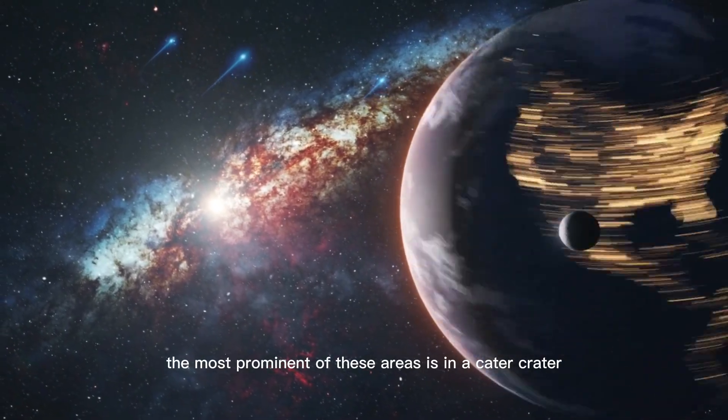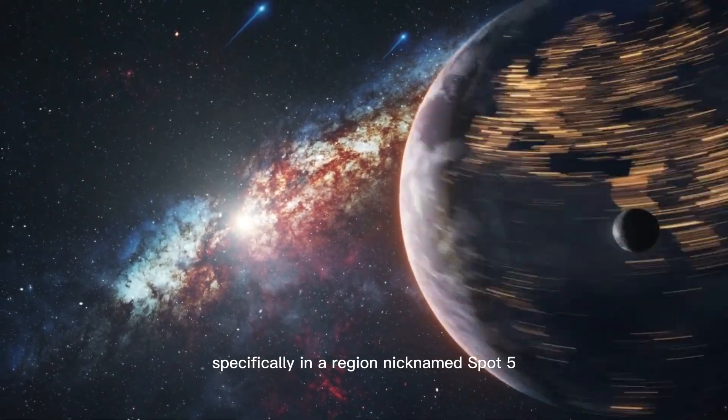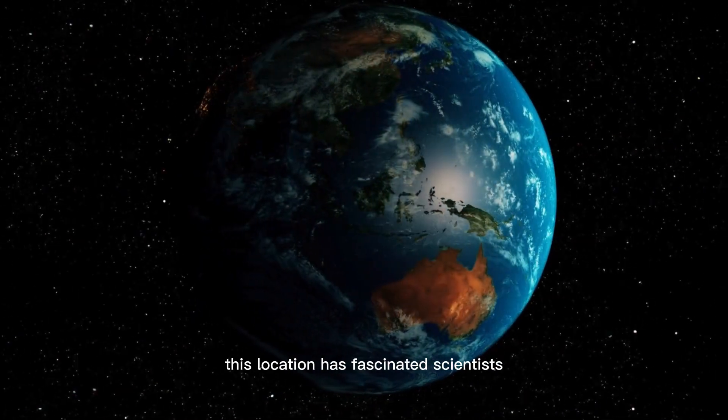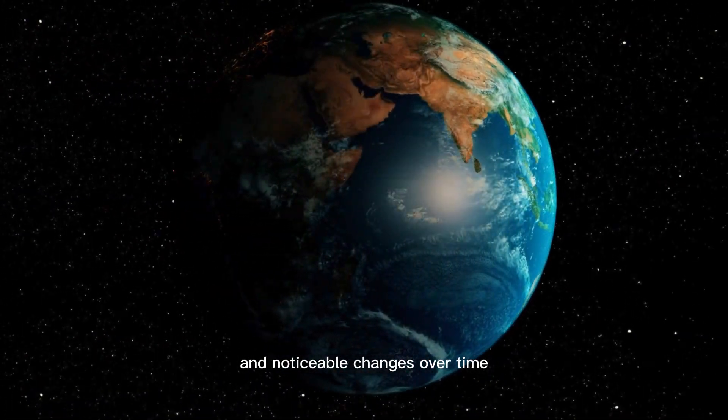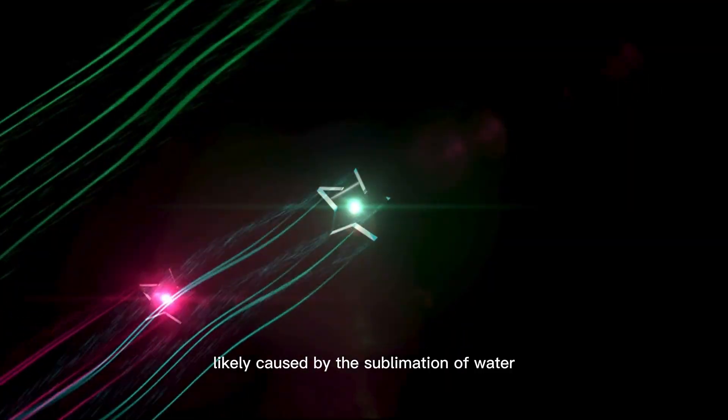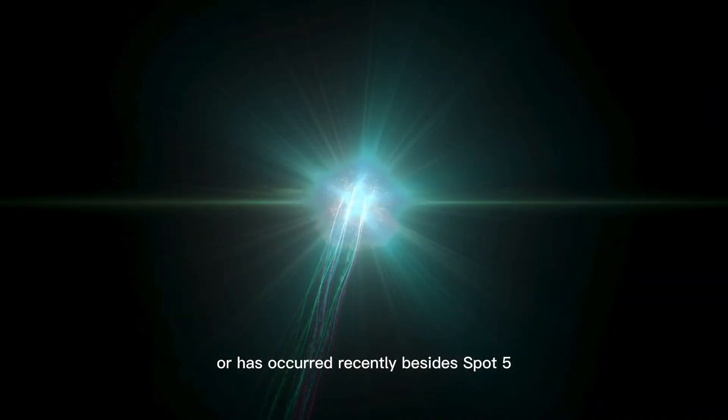The most prominent of these areas is in the Occator Crater, specifically in a region nicknamed Spot 5. This location has fascinated scientists because of its intense reflectivity and noticeable changes over time, likely caused by the sublimation of water, hinting that cryovolcanism is still active or has occurred recently.